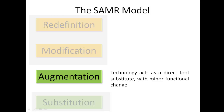This is where technology acts as a direct tool substitute with minor functional changes and minor functional improvements. There are many instances where technology is used at an Augmentation level, but it is important to note that the same technology may be used by a different teacher in a slightly different manner, moving it to a different level of the SAMR model. In other words, technology is not limited to one particular level — it all depends on how it is used.